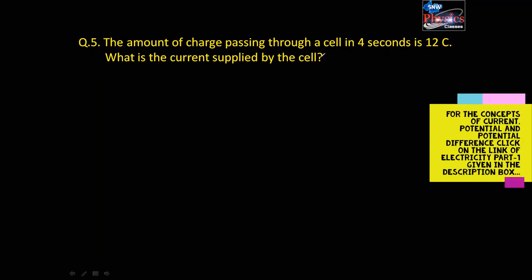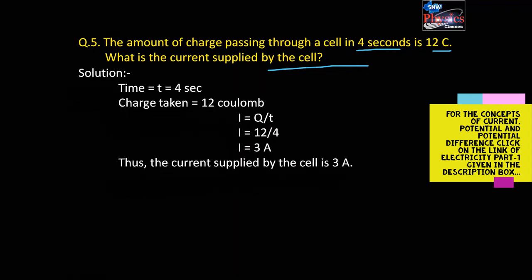Question number 5: The amount of charge passing through a cell in 4 seconds is 12 coulomb. What is the current supplied by the cell? The solution is simple: time taken is 4 seconds, charge is 12 coulomb. Using I equals Q by T: I equals 12 by 4 equals 3 ampere. The current supplied by the cell is 3 ampere. If you have any problem or calculation-related confusion, please comment in the comment section. Like, share, and subscribe to my channel. Thank you very much for watching.